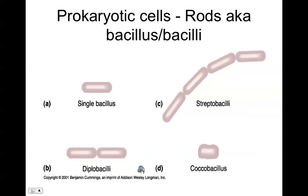If we have prokaryotic cells where the length is longer than the width — what I call finger-shaped or hotdog-shaped, rod-shaped prokaryotic cells — then we would use the word bacillus if it's singular, and bacilli if it's more than one. Depending on how they're arranged, we can have diplobacilli, streptobacilli, or even what are called coccobacilli.